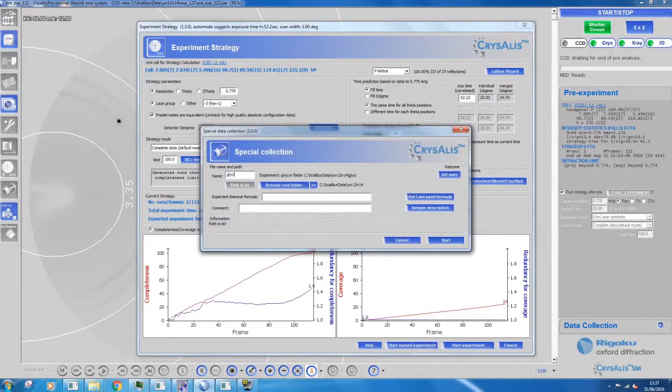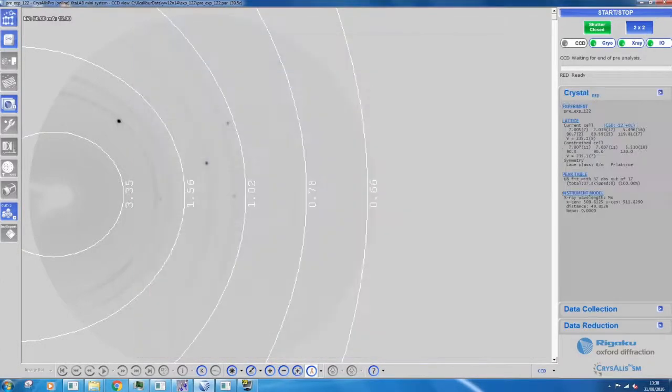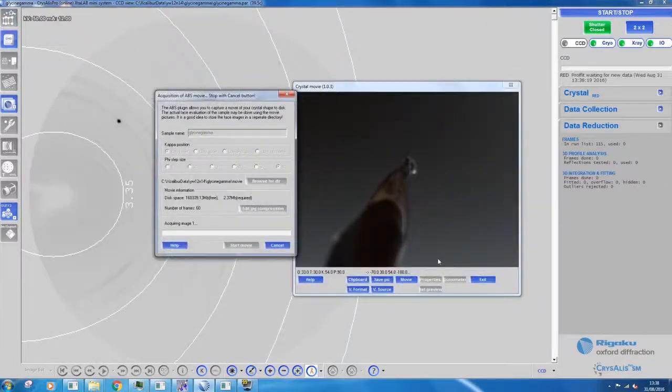Enter your sample name and chemical formula. Choose a directory to save your results. Edit your sample description and press start. The instrument will now automatically begin to collect your data, after which the data will be ready to analyze. You should now be able to collect your own single crystal data using a XtalLAB mini.